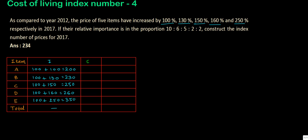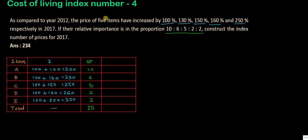Now prepare W, which is weight or relative importance. The relative importance is given in the proportion 10:6:5:2:2. The total sigma W equals 10 plus 6 plus 5 plus 2 plus 2, which is 25.